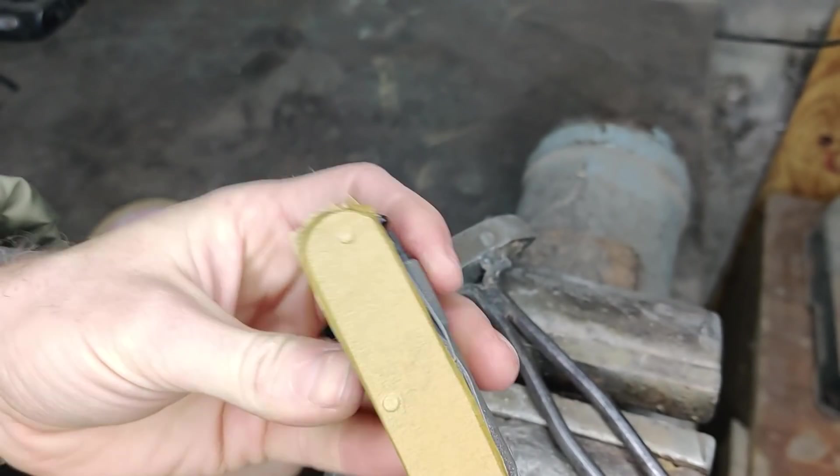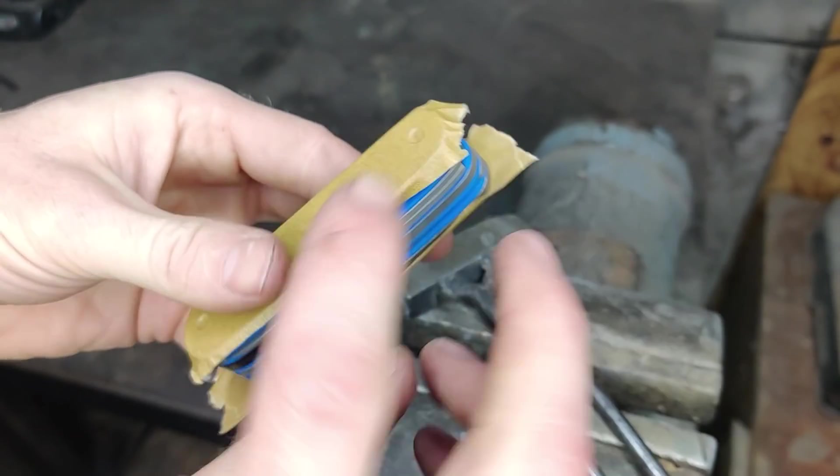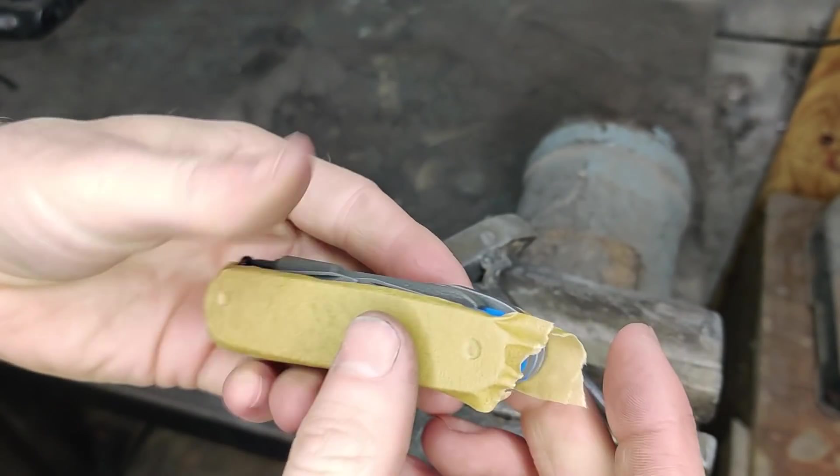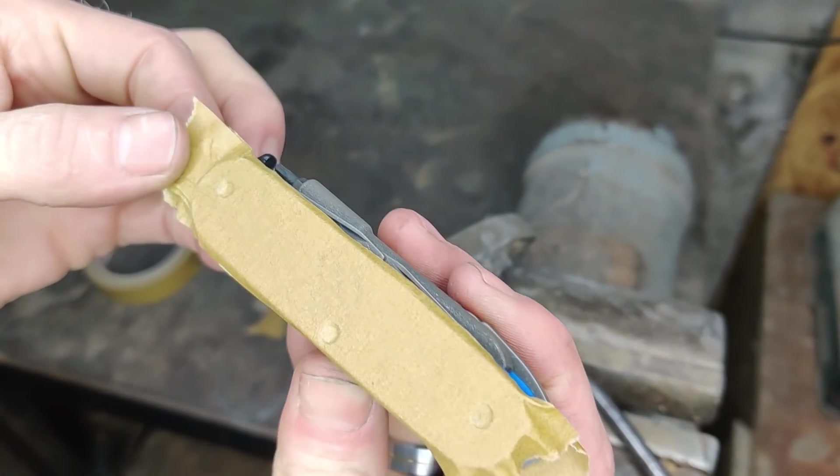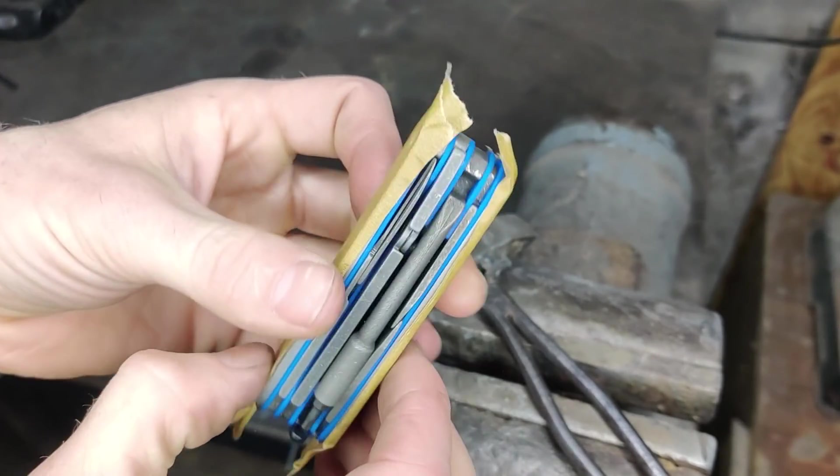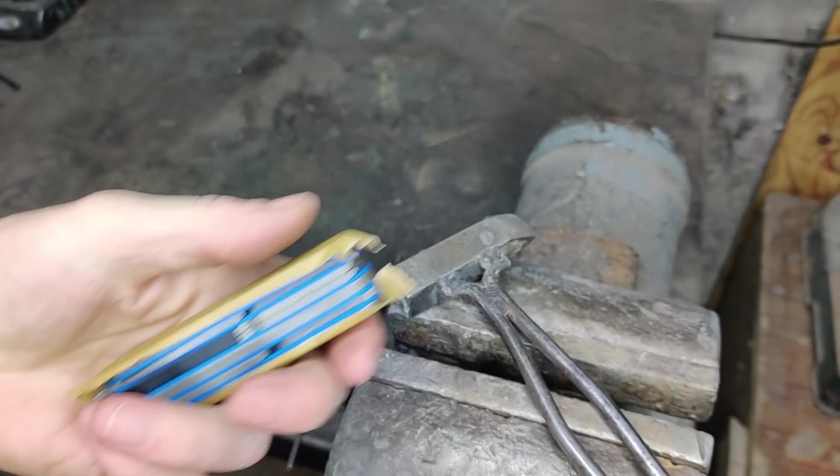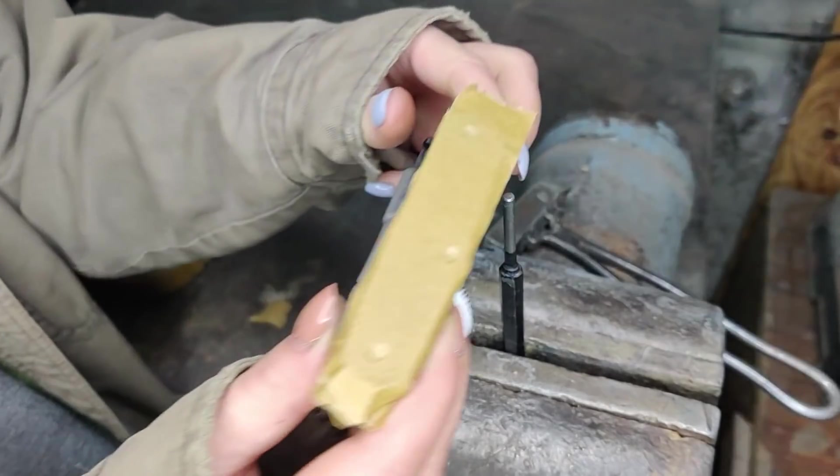All right, so for the next step we're going to be peening it, and I need to do a bit of a setup here. I need a third pair of hands here. And so we'll get this all set up and we'll continue with the peening. My lovely wife is going to be assisting me.